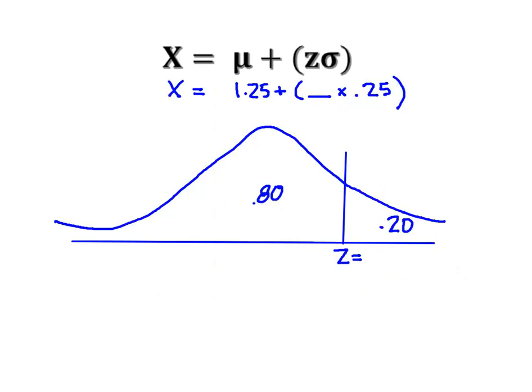We decided that our z-score was going to be 0.84. That's going to be the missing piece of my formula up here. Now I can simply solve that. It's going to end up being 1.25 plus 0.21, which is going to give me an x of 1.46.